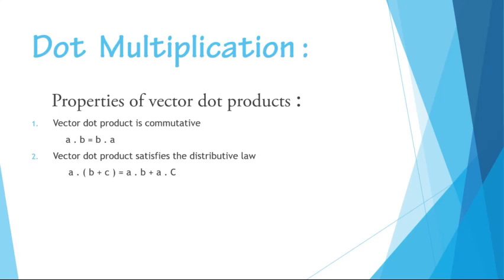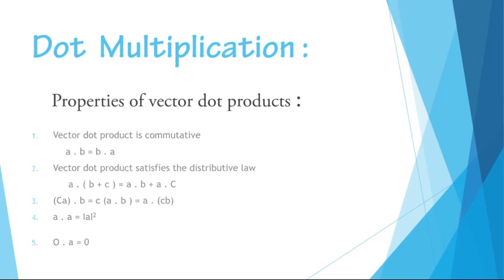Third, c(a·b) = (ca)·b = a·(cb), where c is a scalar. Fourth, a·a = |a|². And lastly, 0·a = 0, where 0 is a zero vector.